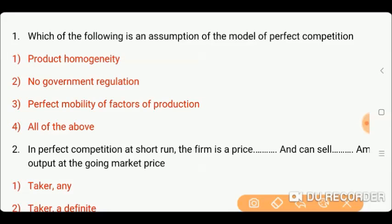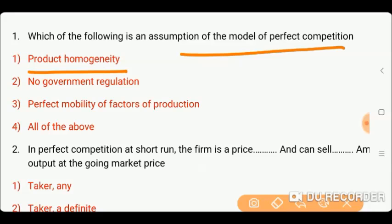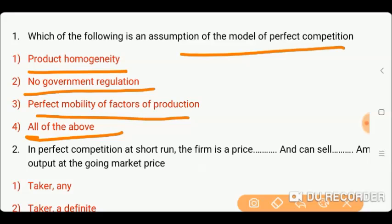First question is: which of the following is an assumption of the model of perfect competition? Option one: product homogeneity. Option two: no government regulation. Option three: perfect mobility of factors of production. Or option four: all of the above.